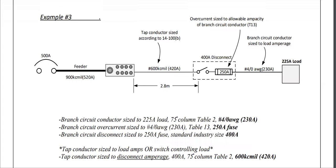Third example: a 225-amp load. We size the branch circuit conductor from Table 2 as a number 4 AWG, good for 230 amps. The overcurrent is sized to the amperage of the branch circuit, which gives us 250 amps. A 400-amp disconnect is then selected to switch on and off the 250-amp fuse. The tap conductor is sized to the load amps or the switch controlling the load. The switch — the disconnect — is 400 amps, giving us a 600 KC mil conductor good for 420 amps.